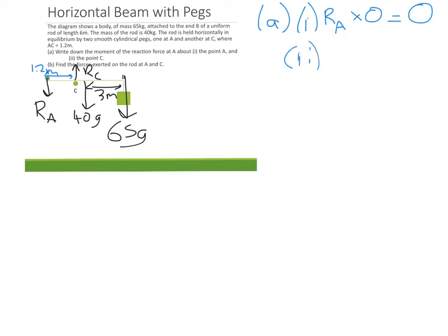Second one, we're asked to calculate the moment of the same force, but this time about the point C. So this time we're doing RA times by the distance from C, which we're told is 1.2. So that just comes out to be 1.2 RA. Really straightforward once you know what you're doing, but just try and make sure that you're looking out for that language. If you're asked to write down the moment, look about what force is it, and what point are you doing it about.